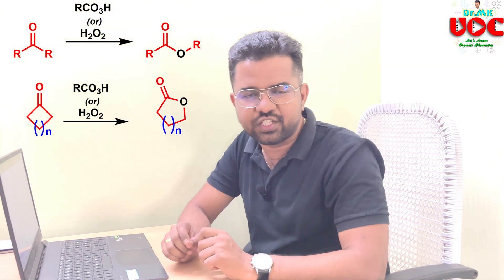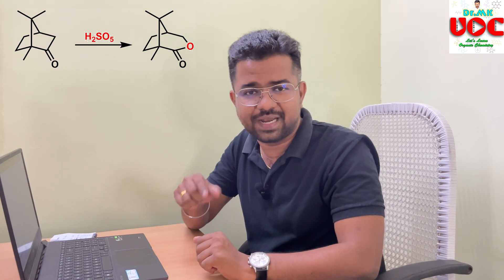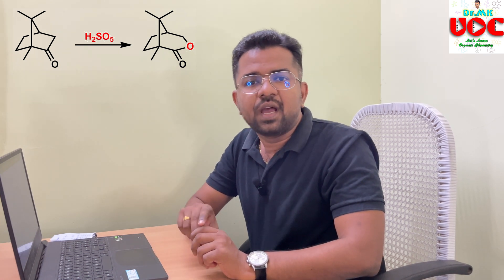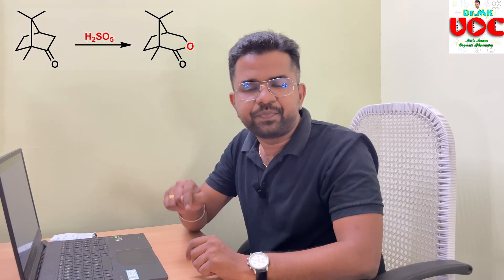You can also call it Baeyer-Villiger rearrangement. This reaction was reported in 1899 by Adolf Baeyer and Victor Villiger. The reaction involved the conversion of camphor into the corresponding lactone, using peroxy monosulphuric acid as a reagent. Various kinds of mechanisms were proposed, and finally Rudolph Criegee came with a new mechanism that was accepted by scientists, and we follow that mechanism till date.